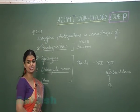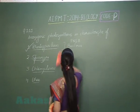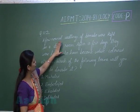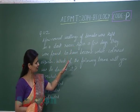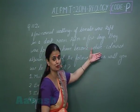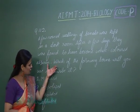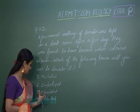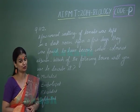Let's proceed towards question number 112. A few normal seedlings of tomato were placed in a dark room — that is, in the absence of light — and they were found to have changed into white-colored albinos. What do you call such a seedling? Such seedlings are known as etiolated seedlings, and this process is known as etiolation.